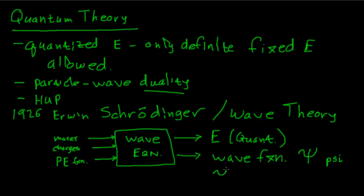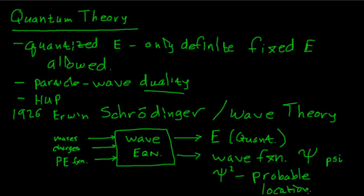Wave functions are related to probability. Specifically, if you take the wave function and square it, it's related to the probable location of our particles. We want to know the energies of electrons in the atom and where we can find them — that's what we get out of the Schrödinger equation.